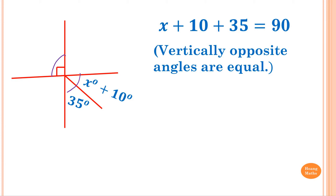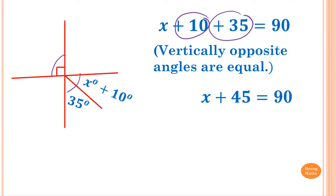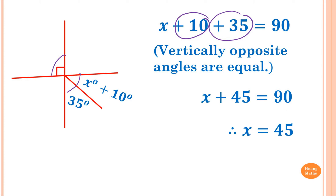To find X, collect like terms first. So 10 plus 35 is 45, giving us X plus 45 equals 90. To solve for X, subtract 45 from both sides: 90 minus 45 is 45. Therefore X is equal to 45.